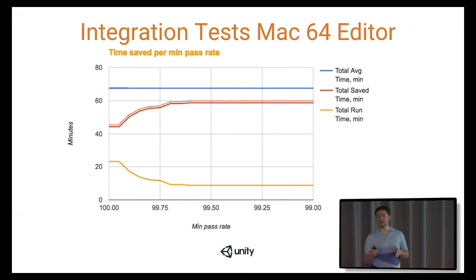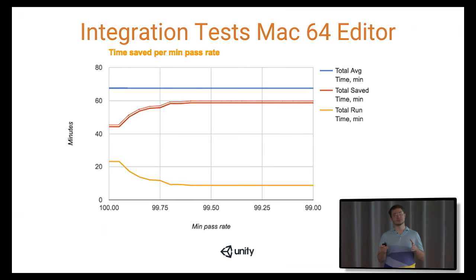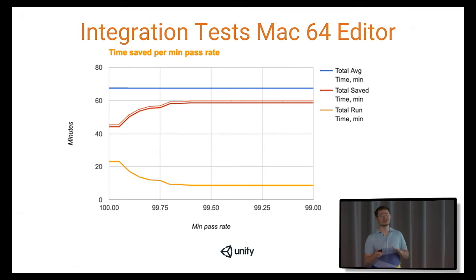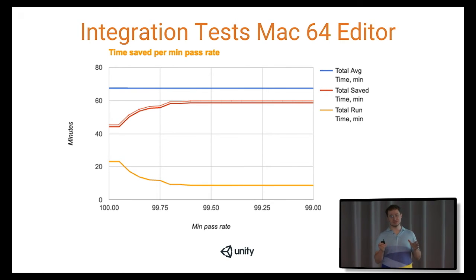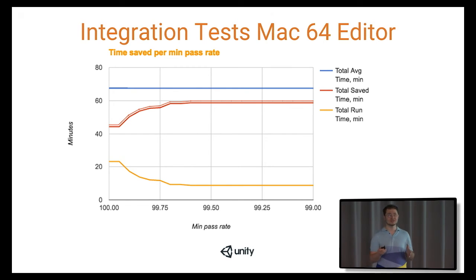These graphs show on the horizontal axis the minimum pass rate, and on the vertical axis the minutes saved. We started with 100% minimum pass rate. If we play with the numbers and go down to 99.75%, we can save not just 20 minutes but even 10 more minutes. So there is still a space for improvement.